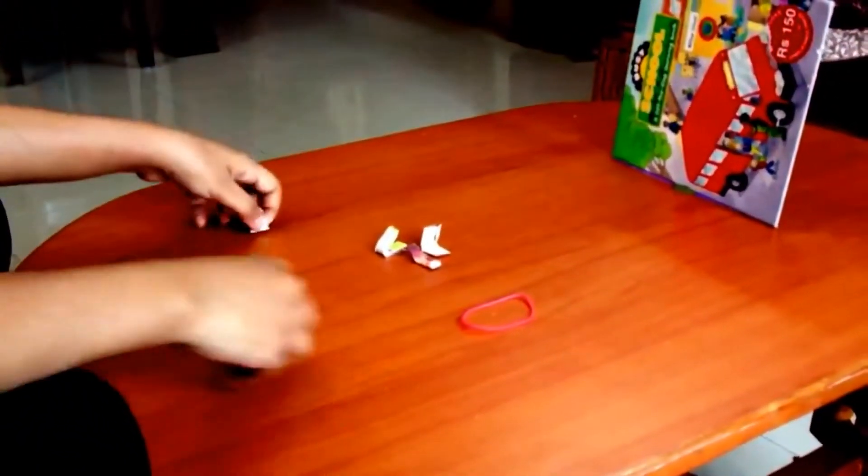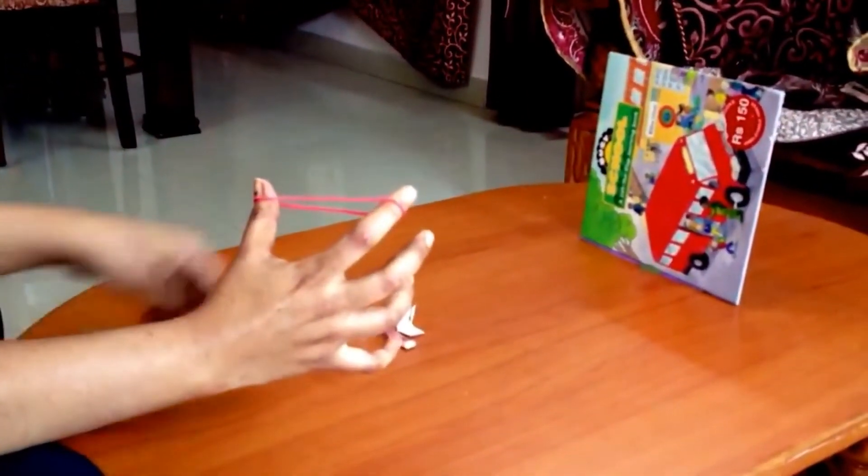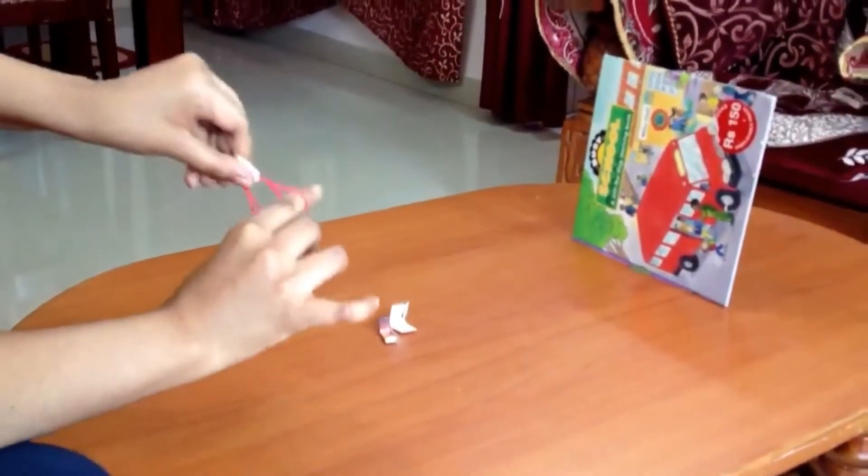Hold a rubber band between your thumb and index finger. Put the paper arrow in the band and stretch the band along with the paper arrow.